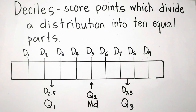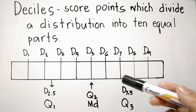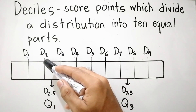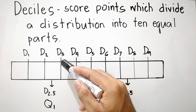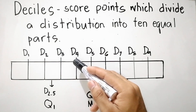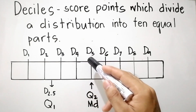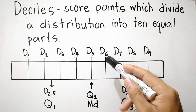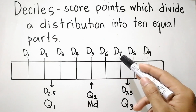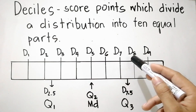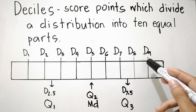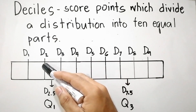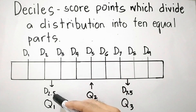These score points are denoted as D sub 1 (first decile), D sub 2 (second decile), D sub 3 (third decile), D sub 4 (fourth decile), D sub 5 (fifth decile), D sub 6, D sub 7, D sub 8, and D sub 9 (ninth decile). Between D sub 2 and D sub 3, that is D sub 2.5.